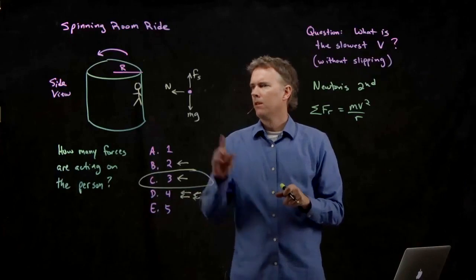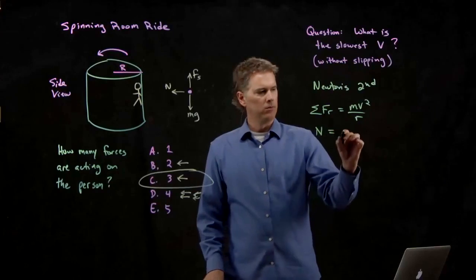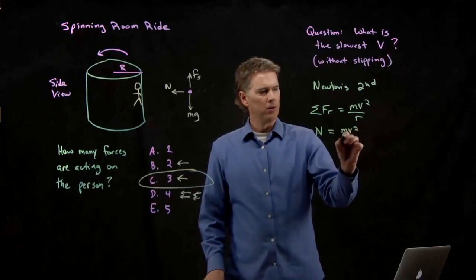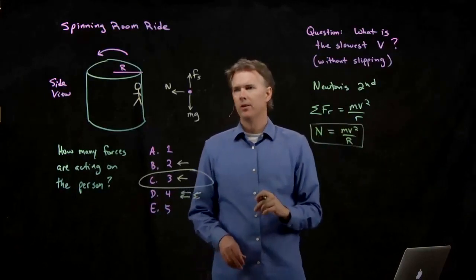The radial direction is not too bad. There's only one force. And we know that the sum of all the radial forces has to add up to MV squared over R. Okay? There's only one. It's the normal force. So we get normal force is equal to MV squared over R. That's one of our equations that we're going to use.